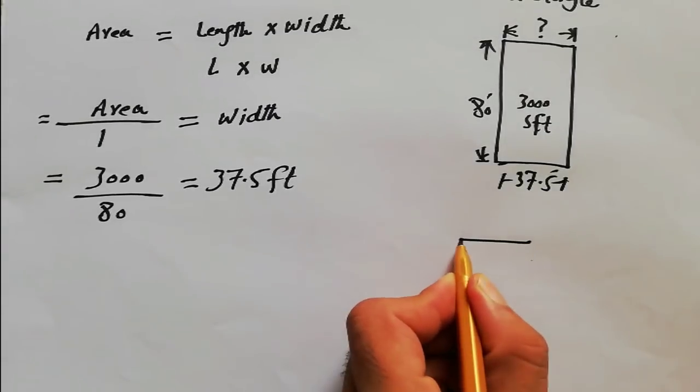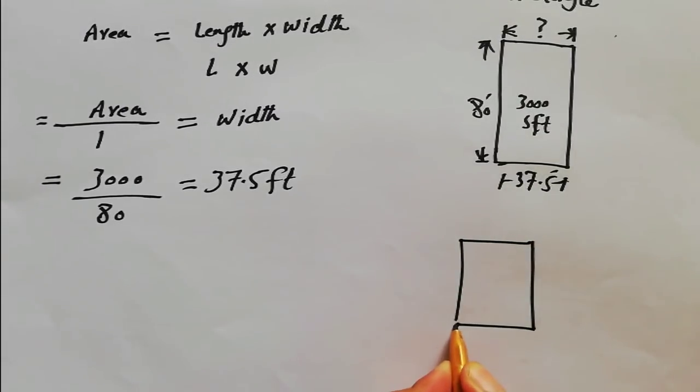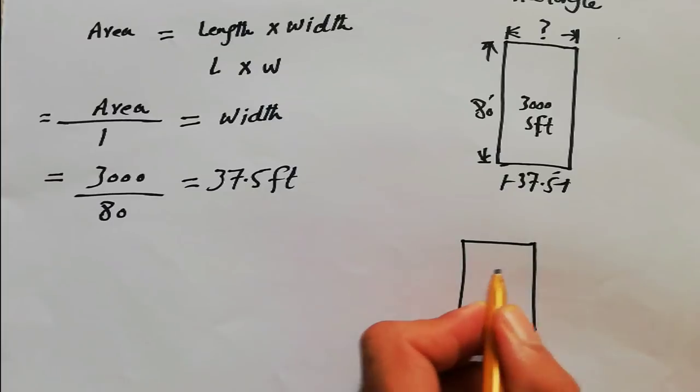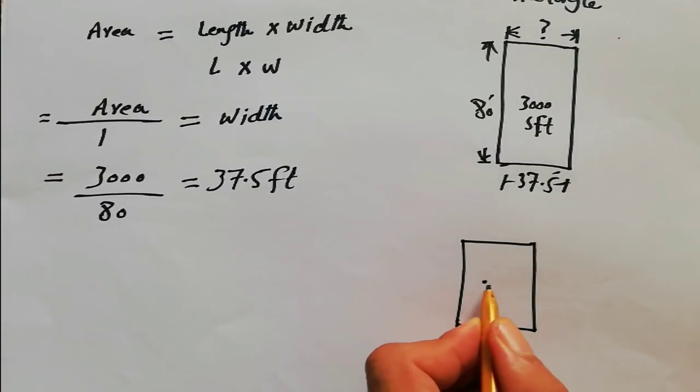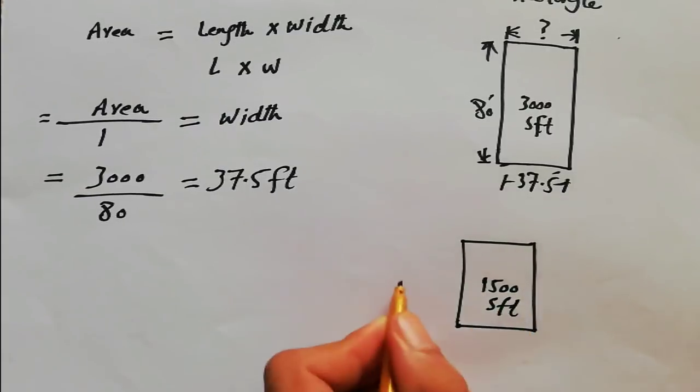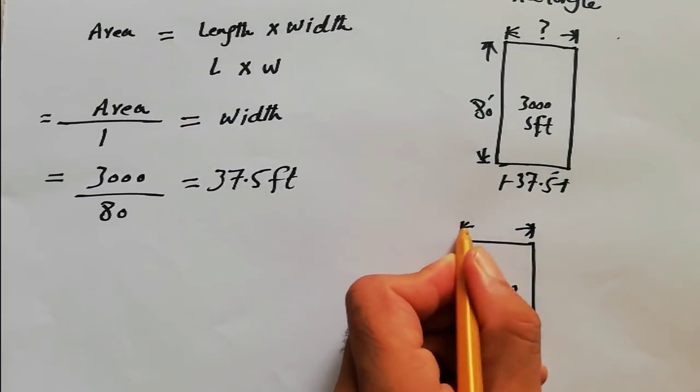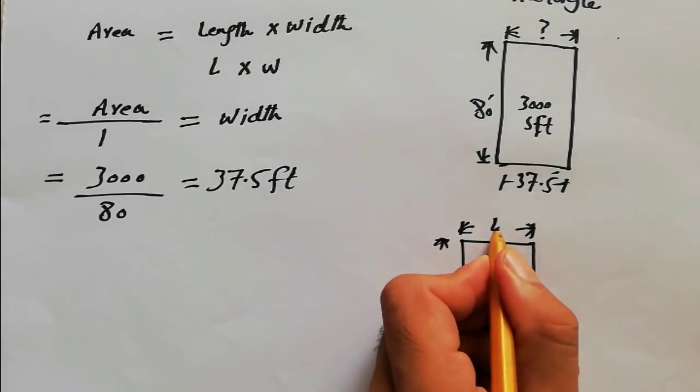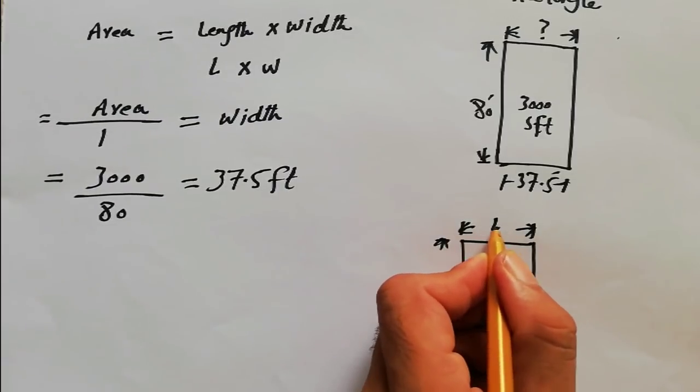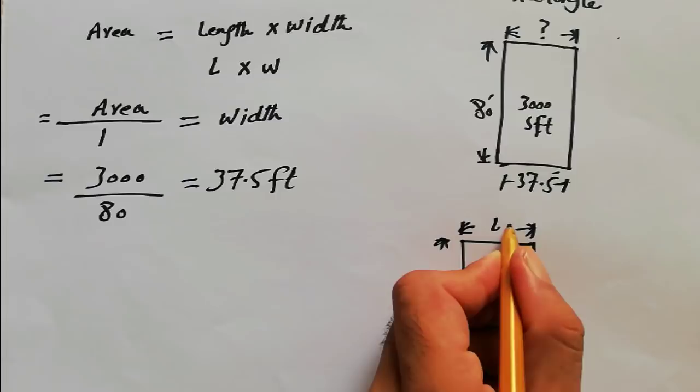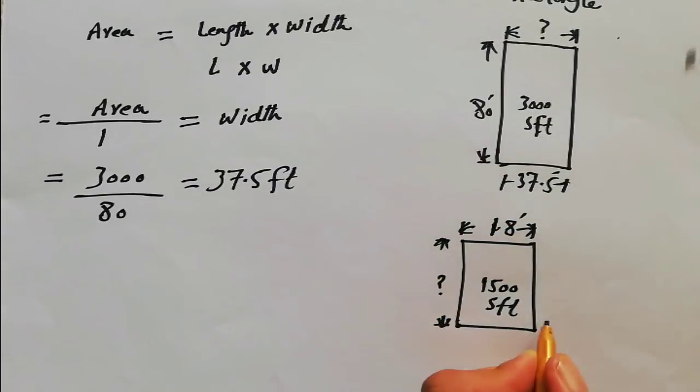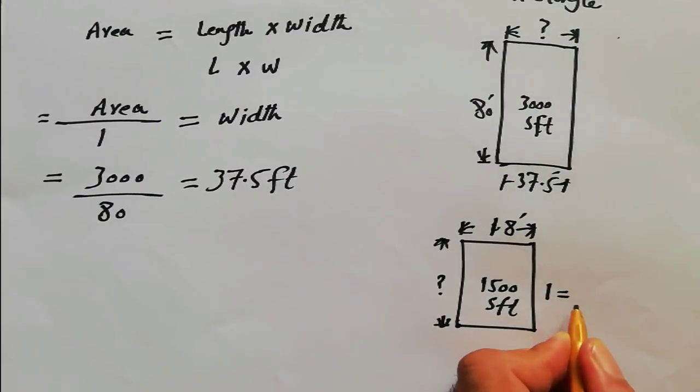Here is another shape. We have the total area, suppose 1500 square feet. Width is given and we require the length. If the width is here, suppose the width is 18 feet, what will be the length? I have to find the length.